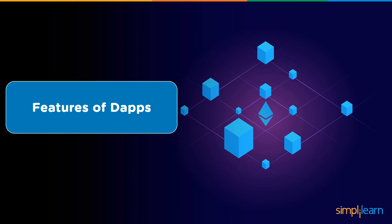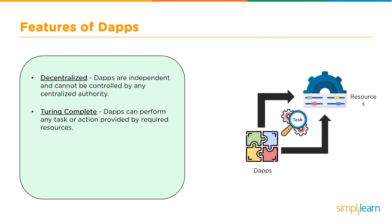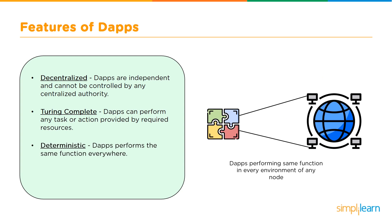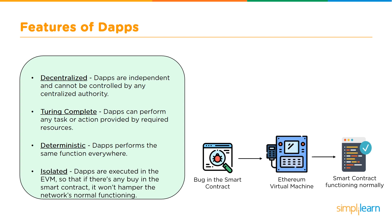Let's discuss the features of dApps which make them so unique and popular. First is decentralized — dApps are independent and cannot be controlled by any centralized authority. Second is Turing complete — dApps can perform any task or action provided the required resources. Third is deterministic — irrespective of the environment, dApps perform the same function everywhere. And the last one is isolated — they are executed in the Ethereum Virtual Machine, a virtual environment, so that if there's any bug in the smart contract it won't hamper the normal functioning of the Ethereum network.